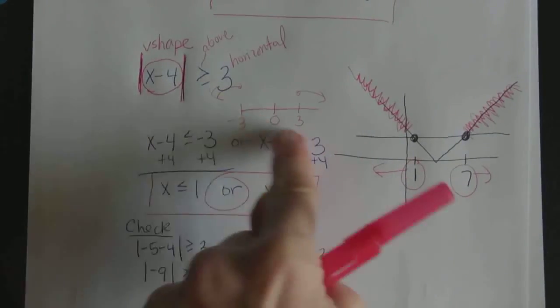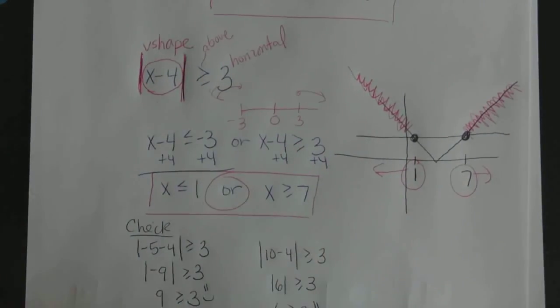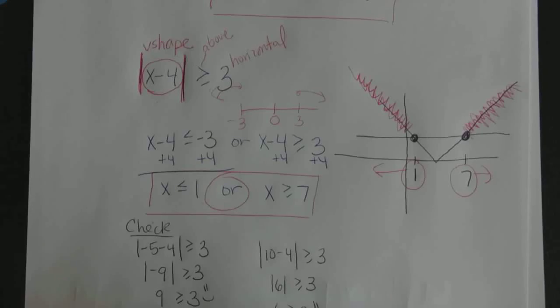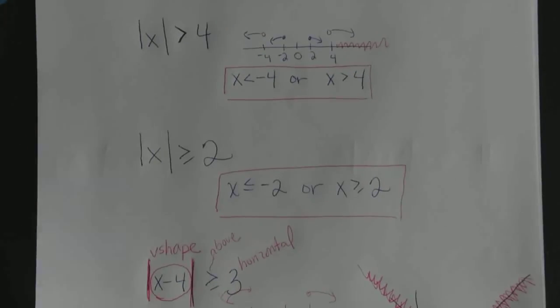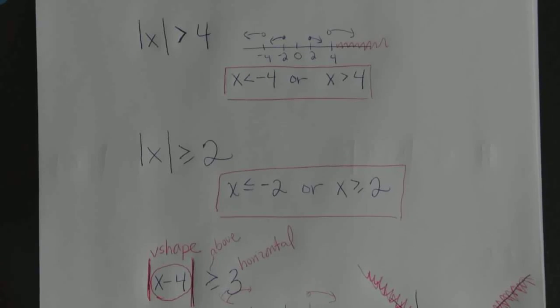Whenever you're dealing with absolute value and a distance, you could be out here on the positive side or out here on the negative side — you always have two sides of the story. That's what gives absolute value two distinct solution sets. Good luck with the mastery — I'd love for you to do it algebraically by hand and then confirm your answers on the TI. Thanks for watching.